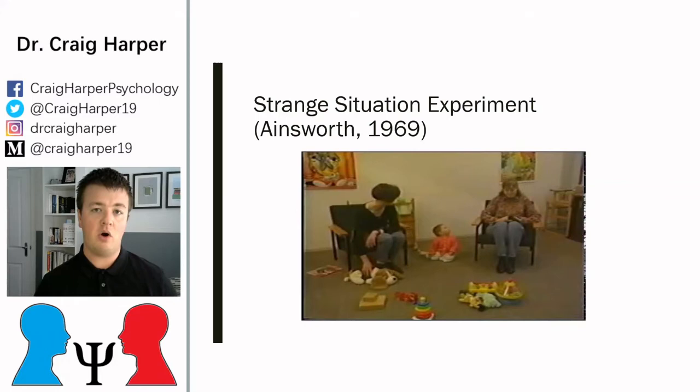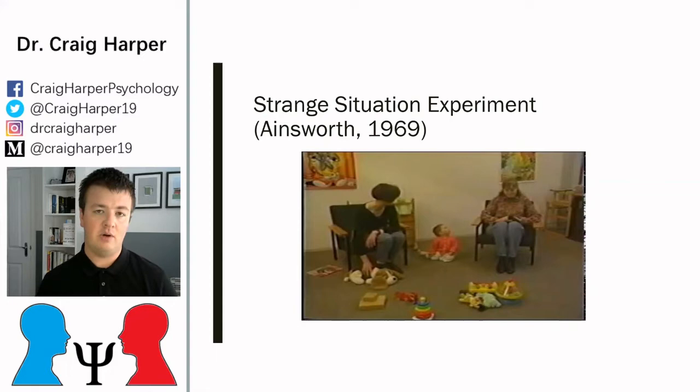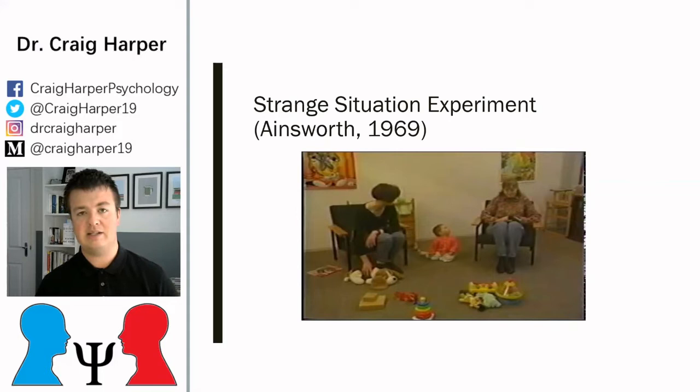I'm going to show a video of the strange situation experiment. This is a way that developmental psychologists assess attachment styles in young infants, because obviously they can't fill out self-report questionnaires like adults would when measuring attachment styles. The strange situation experiment was developed by Mary Ainsworth back in the 1960s and it looks at things like separation anxiety and reunion behavior — what happens when an attachment figure returns after they've been away.